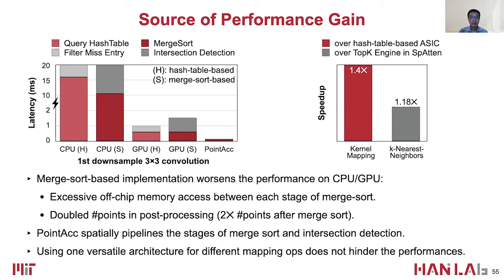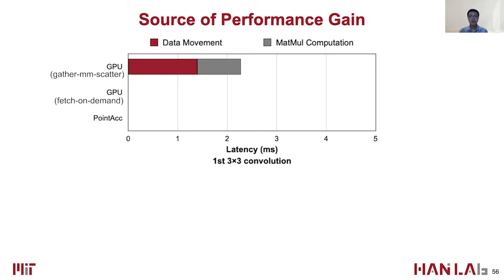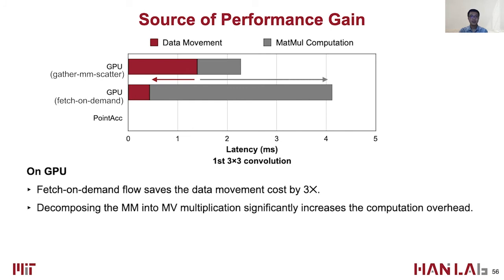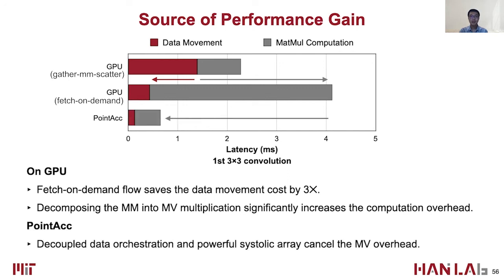Using one versatile architecture, Point Tech outperforms specialized designs for each mapping operation independently. Here we break down the latency of the matrix multiplication. On GPU, fetching only the on-demand input features saves the data movement cost by 3x. The matrix-matrix multiplication decomposes into matrix-vector multiplication, which significantly increases computation overhead due to low utilization of GPU cores. However, such overhead is removed in Point Tech because of the computation power of the systolic array.